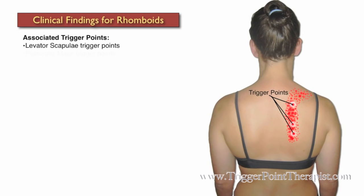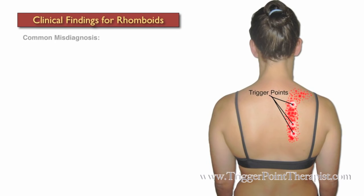Trigger points in the levator scapula, pectoralis major, and middle trapezius fibers are all associated with trigger points in the rhomboid muscles. Clients are sometimes misdiagnosed with a condition known as scapulocostal syndrome when in fact the pain is caused by trigger points in the rhomboid muscles.